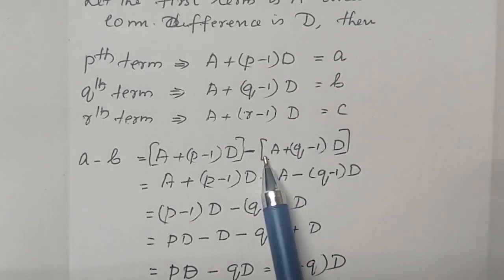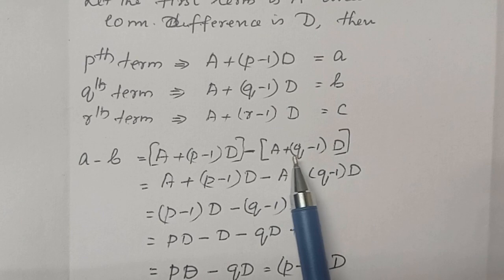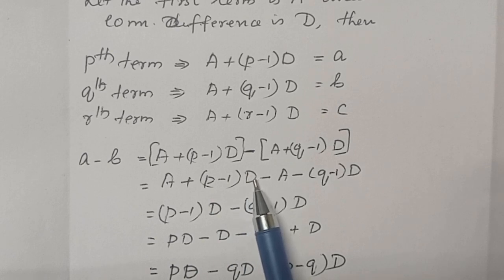A plus P minus 1 into D minus B. B is the Qth term, substituting the values. Then here it is a negative sign. Therefore, when we are removing the negative sign, the terms inside the bracket are changing. It will be minus A and the positive will be negative. Now, positive A and negative A are cancelling.